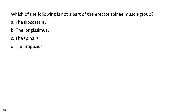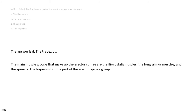Which of the following is not a part of the erector spinae muscle group? A. The iliocostalis. B. The longissimus. C. The spinalis. D. The trapezius. The answer is D, the trapezius. The main muscle groups that make up the erector spinae are the iliocostalis muscles, the longissimus muscles, and the spinalis. The trapezius is not a part of the erector spinae group.